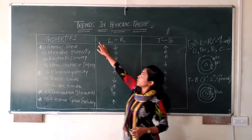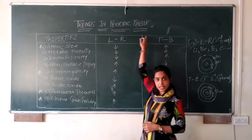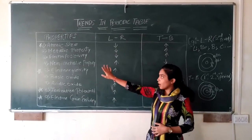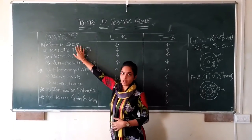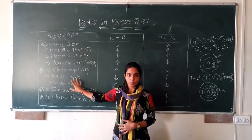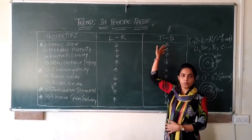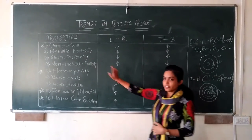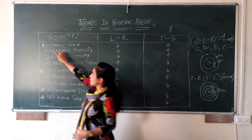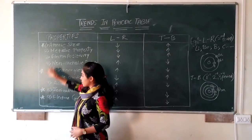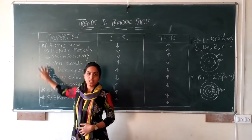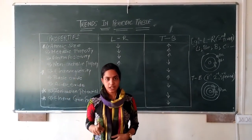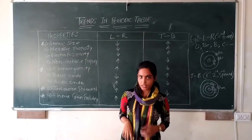Hi guys, we are going to study trends in the periodic table. We will observe properties going left to right and top to bottom, and their effects. We will study these 4 properties as they are very important.